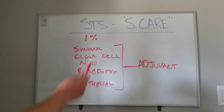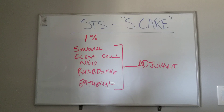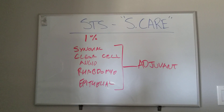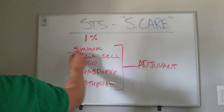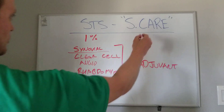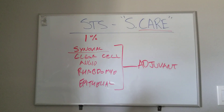The reason I put the period by the S is because a recent article looked at these five types to validate this mnemonic, and they actually found that synovial has significantly less lymph node involvement than the other four. They even recommended using just CARE as the mnemonic and dropping the S.